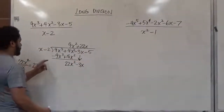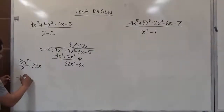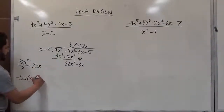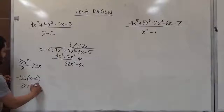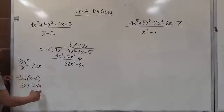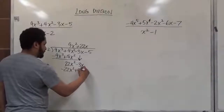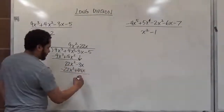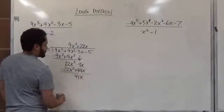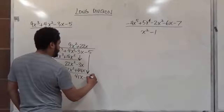We take the opposite, negative 22x, and multiply by the divisor x minus 2. This gives us our subtractor: negative 22x squared plus 44x. The first two cancel out to 0, the second two add up to 41x. We bring down the third term, which is minus 5, giving us 41x minus 5.